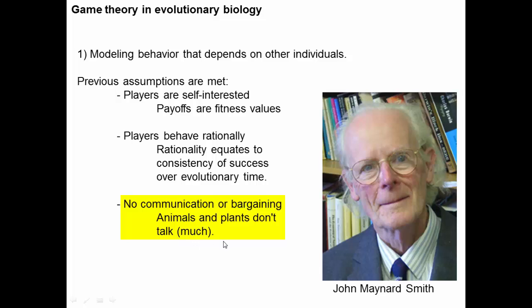No communication or bargaining is true because animals and plants don't talk much to each other. Even in situations where there is communication between animals, we can analyze that in terms of strategies that favor individuals. Altruism — truly just helping other individuals — is essentially non-existent in nature. So the assumptions of game theory appear to be met in biological systems, and we can use this thinking to analyze behaviors.